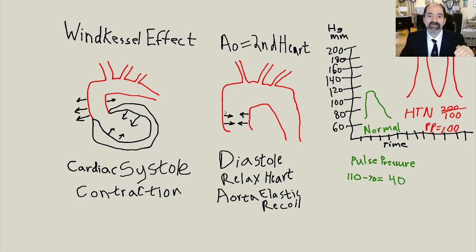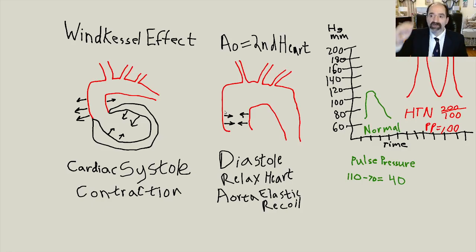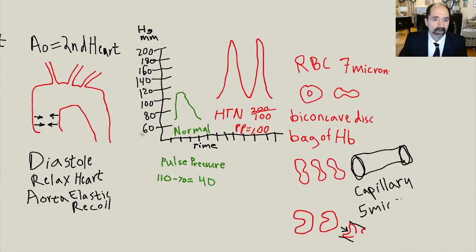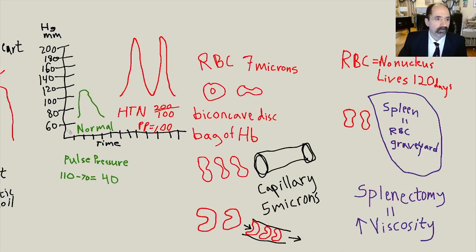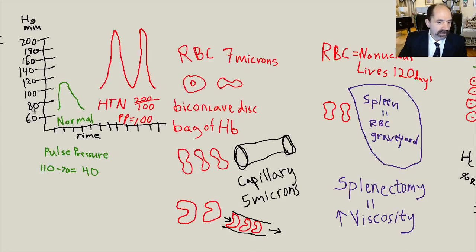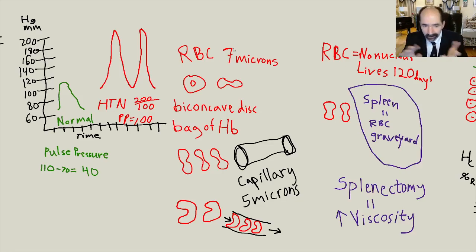The Windkessel effect is progressively lost. Once it's lost, they can't maintain diastolic flow, so they have to increase systolic flow — the cardiac contraction phase. Here's a diagram of blood pressure. When you look at these pressure curves, the green is for normal blood pressure, about 110 over 70. The red is a very hypertensive person going up to a systolic pressure of 200 over 100.